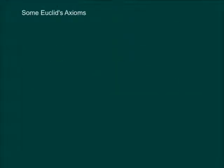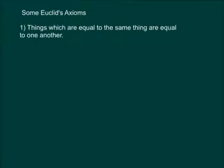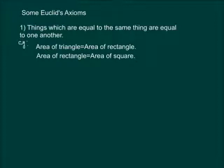Let us state some of Euclid's axioms and discuss them. Things which are equal to the same thing are equal to one another. In terms of geometry, it would mean if an area of a triangle equals the area of a rectangle, and if the area of the rectangle is equal to area of the square, then the area of the triangle is also equal to the area of the square.